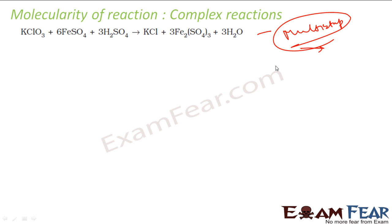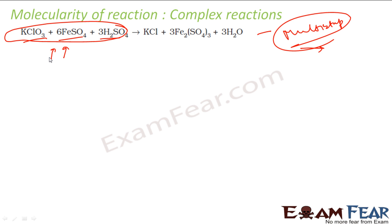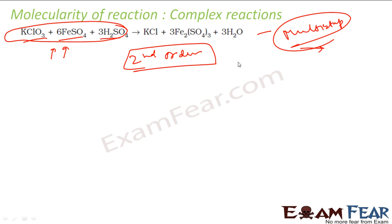Molecularity of a reaction is only unimolecular, bimolecular, or trimolecular — because it is observed that more than three molecules never combine to form a product in one step. For example, if a reaction appears to involve 10 molecules combining, they are not combining in one step. That reaction may seem to be 10th order, but experimentally it is found to be second order.